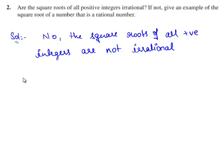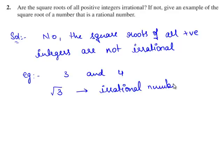So let us consider two positive integers, say 3 and 4. We consider square root of 3, which is an irrational number. But when we consider square root of 4, which is equal to 2, is a rational number.